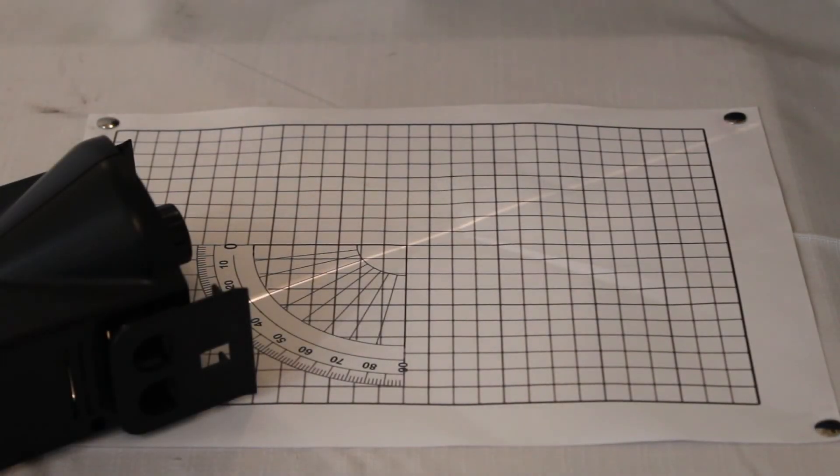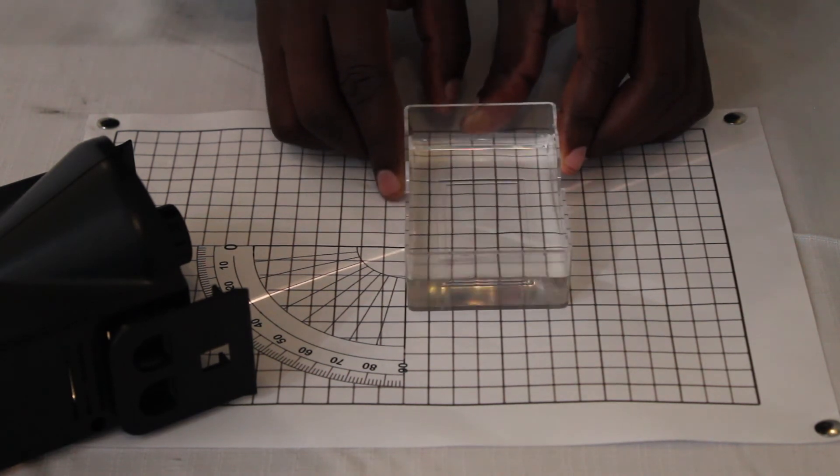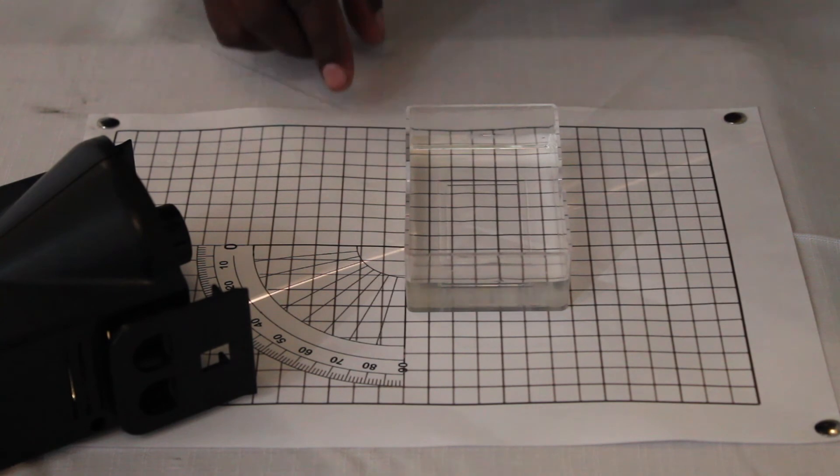Now, that was one part where we are using the prism. We also could use water to measure the angle. So here is our water in a container. We can put it there. I'm using the same angle at 30 degrees.